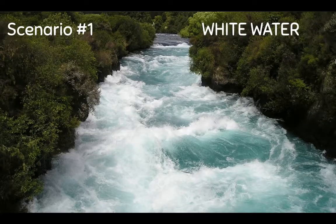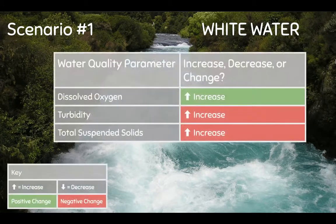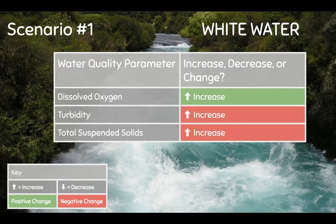Let's talk about some different environmental scenarios that might affect water quality. Imagine you're at a fast-moving river with rapids — how might these rapids affect water quality? The color of the water looks white from all the bubbles being created, and when there are bubbles, we know there tends to be more dissolved oxygen. Fast-moving water is likely stirring up a lot of sediments, and when all that sediment gets into the water, it's going to increase the turbidity and total suspended solids. Remember, salmon like a lot of oxygen, but don't like water with a lot of turbidity. How do you think a salmon would feel living here?